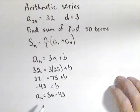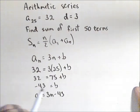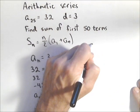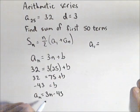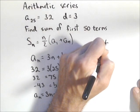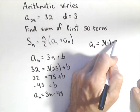Remember what we needed? We needed the first term and the 50th term. So now we can find a₁, which is three times one minus 43.